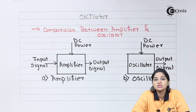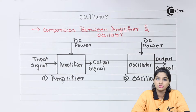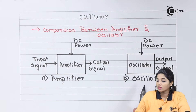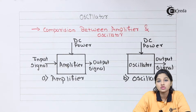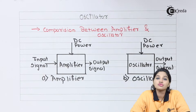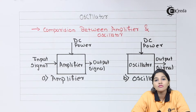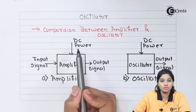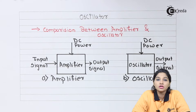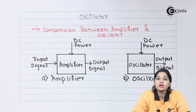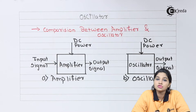Now let's see how the oscillator is differentiated from an amplifier. For that purpose we need to consider the diagram first. From the diagram we can see that both the amplifier and oscillator have DC power as an input, but in case of an amplifier there is an input signal present, whereas in case of an oscillator there is no input signal. An amplifier is a circuit which produces an output signal that is an amplified version of the input signal, having the same frequency and waveform as the input signal, but with a higher energy level.